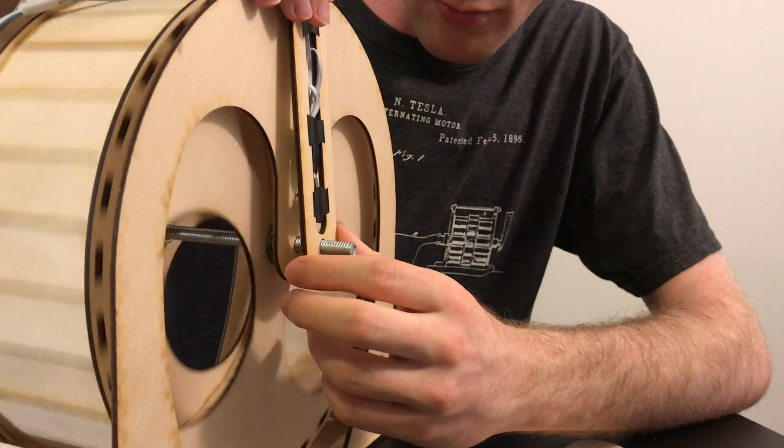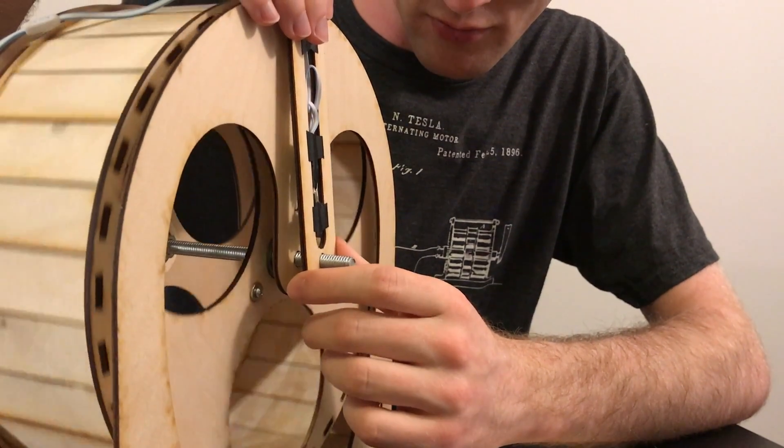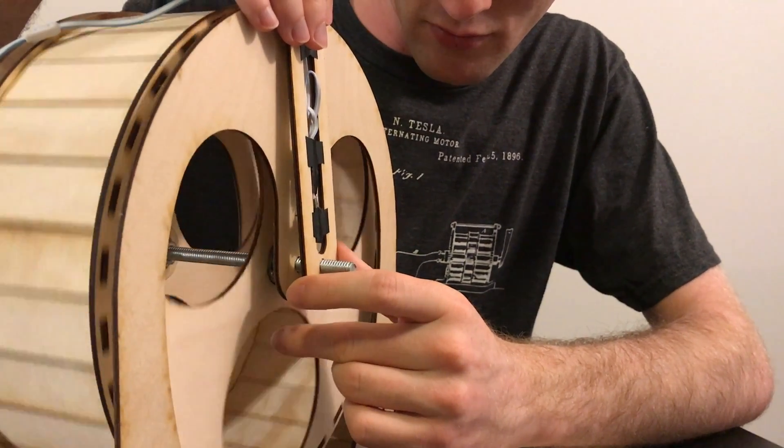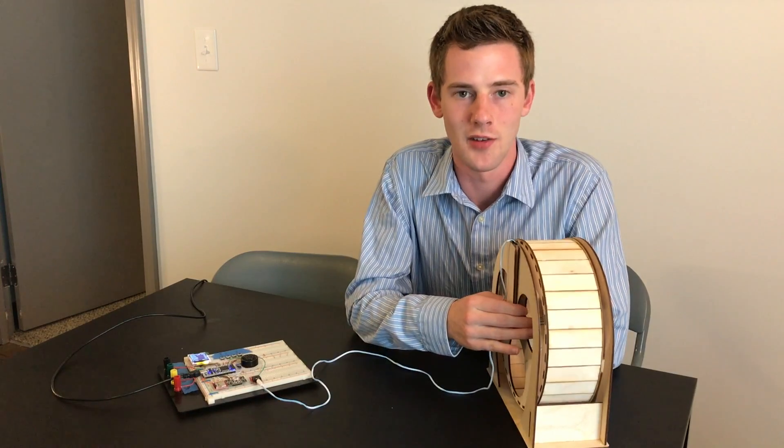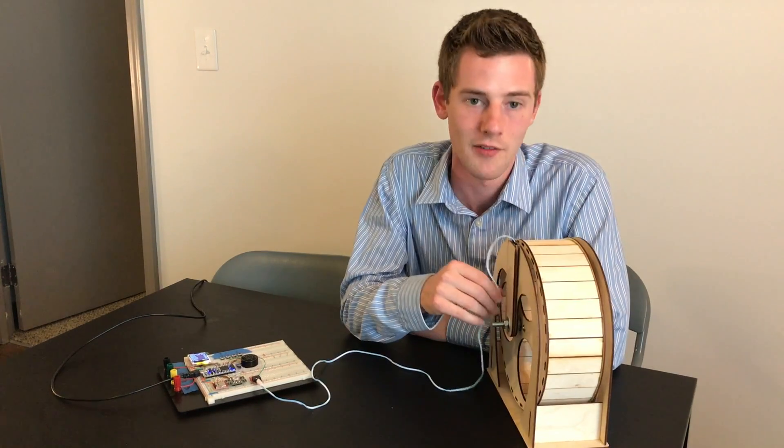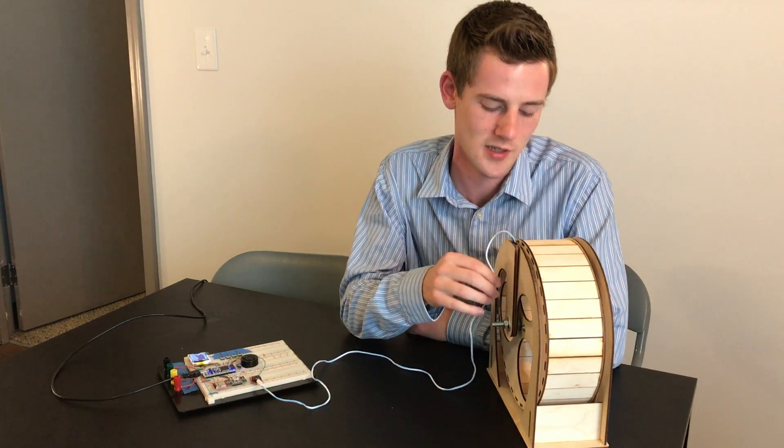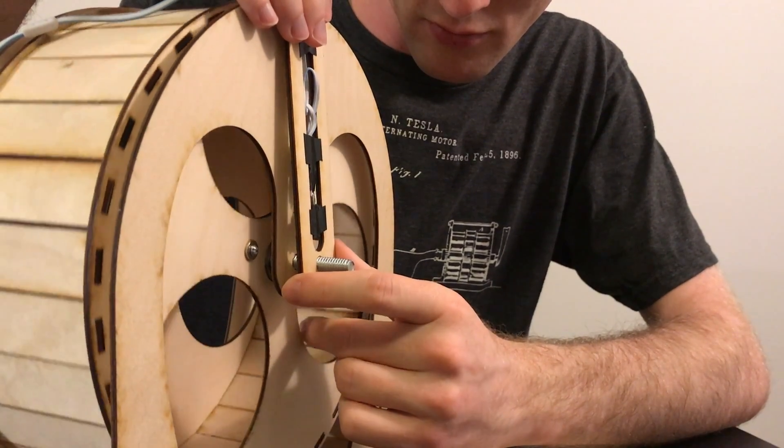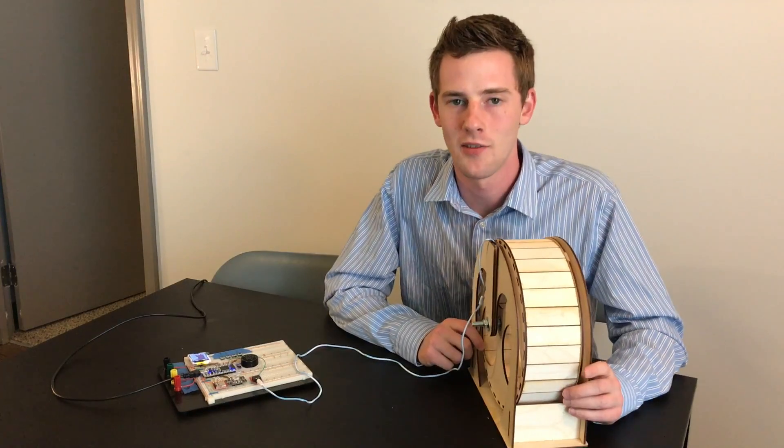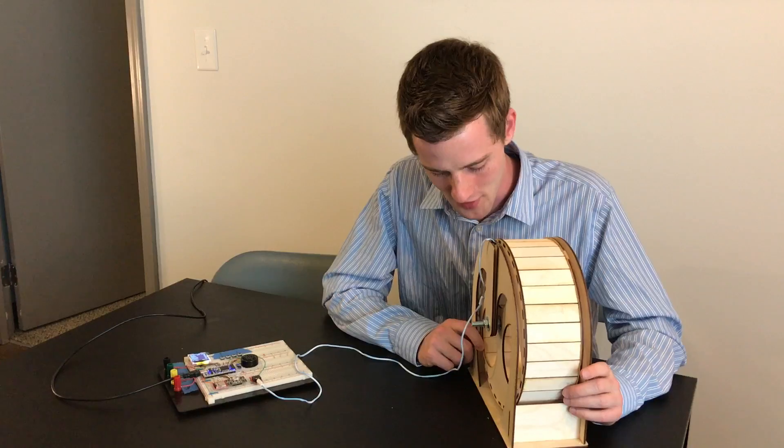Now that you're happy with the wiring you need to position the reed switch in a way that will allow consistent detection of the magnet. I found that the reed switch detects most consistently when positioned around here. You'll know it when you have the correct reed switch placement when it sounds like this.